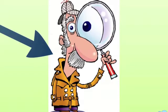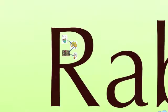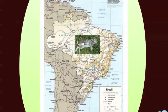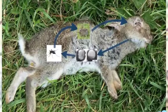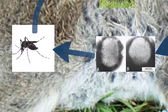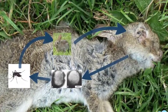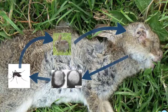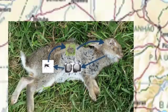A possible solution came from Brazil in the form of the myxoma virus. This virus had been responsible for the deaths of many European rabbits who had been introduced to Brazil. The virus is easily carried by biting insects, so once it's introduced to an area, it will continue to spread. When one mosquito bites an infected rabbit and subsequently bites a healthy one, the healthy one will become infected. Therefore, in terms of population control, it seemed like a wonderful solution.